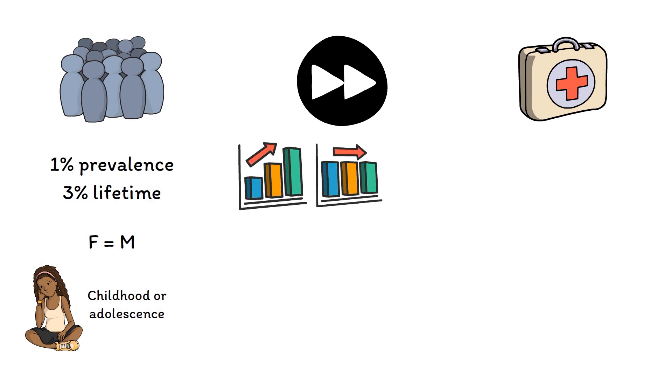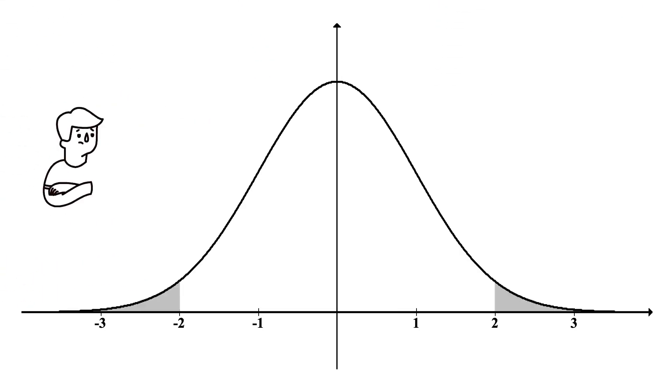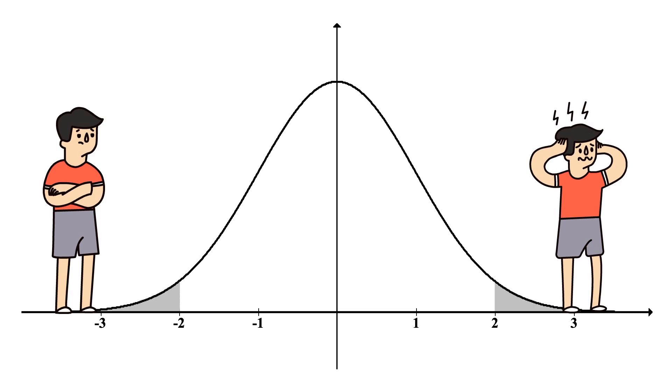OCD is not an episodic disorder, and symptoms can continue for years or even decades if left untreated. The severity of OCD is on a spectrum, as some people are only mildly affected, while others are completely disabled.